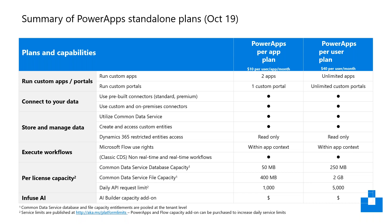There is also a daily API request limit of 1,000 requests on the Power Apps Per App Plan and 5,000 on the Power Apps Per User Plan. To address greater need for API requests, you can purchase 10,000 daily API requests at $50 per unit, which can be used for both Power Apps and Flow.